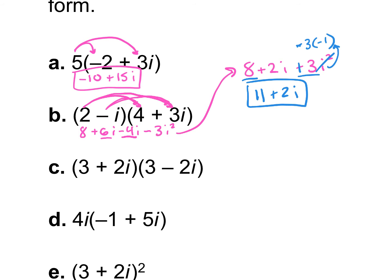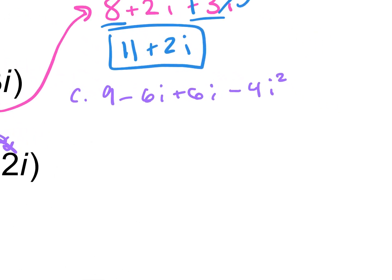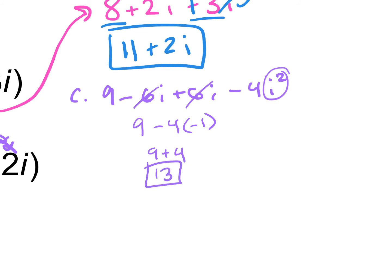For example C we FOIL again: first terms give 9, outsides give negative 6i, insides give positive 6i, last gives negative 4i squared. Combining like terms: negative 6i and positive 6i cancel, leaving 9. The i squared turns into negative 1, so negative 4 times negative 1 is positive 4. So 9 plus 4 equals 13. That's the answer.